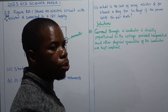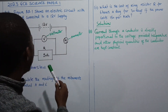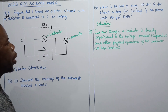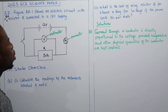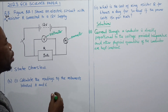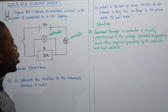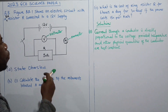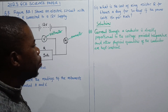So Ohm's Law states that the current flowing through a conductor is directly proportional to the voltage, provided other conditions such as temperature and other physical quantities are kept constant. This simply means if the voltage is doubled, the current also gets doubled in the same ratio.